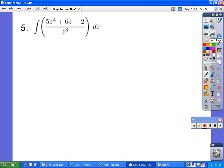In this problem we can separate. So to simplify this we can integrate. It will be 5z to the 4 over z cubed plus 6z over z to the power of 3 minus 2 over z to the power of 3.